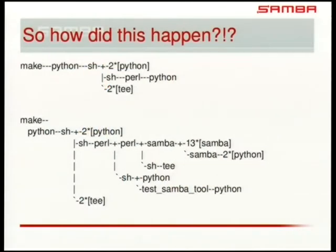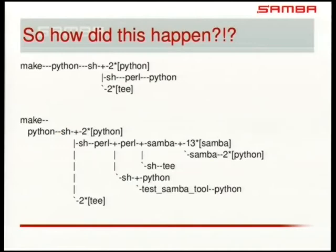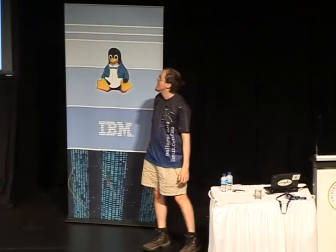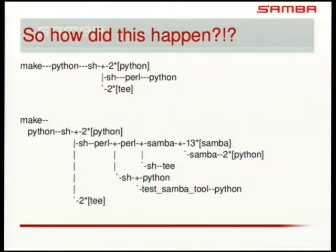This is what happens when you run make test. Question for the room: how many scripting languages can you find on that screen? We've got Make, we've got Python, we've got Shell, Perl. And these are the ones that are just involved in running our test scripts. For a C project, we do an awful lot of scripting.